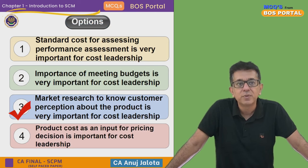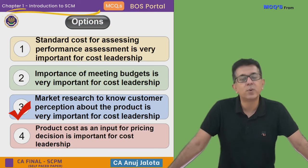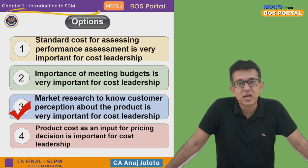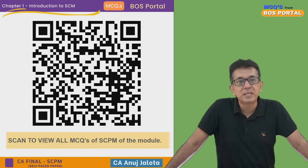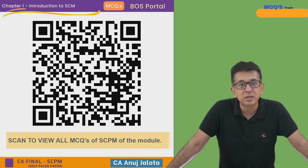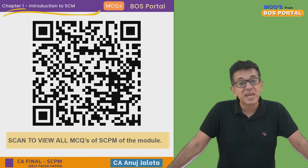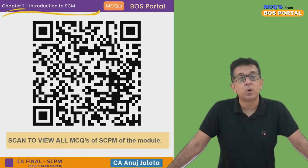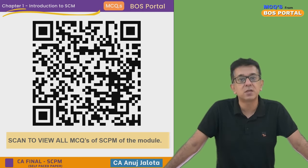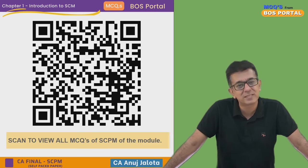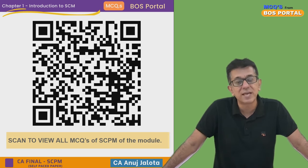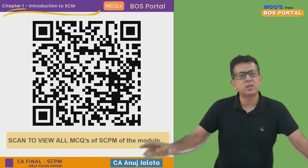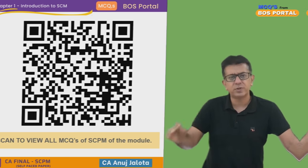So out of the four options, option number three is the correct answer — that is the false statement. That's done for today's video. In case you want to see all the other videos from the SEPM modules, this is the QR code — you all can scan and view all the questions. Thank you guys, I'll see you next time. Bye.